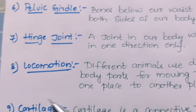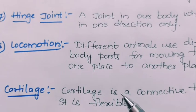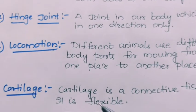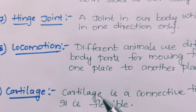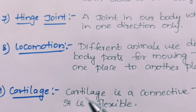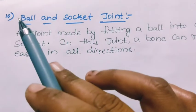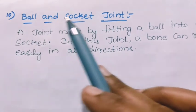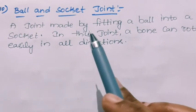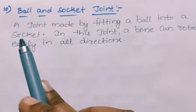Next, cartilage. Cartilage is a connective tissue. It is flexible and is present at the soft parts of our body, such as the ears and nose. Next, the last keyword: ball and socket joint. This is a joint made by fitting a ball into a socket.